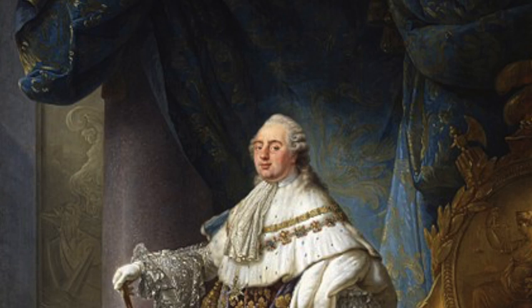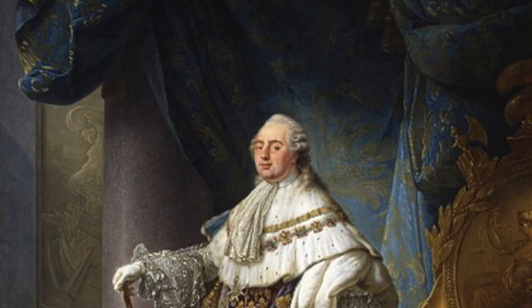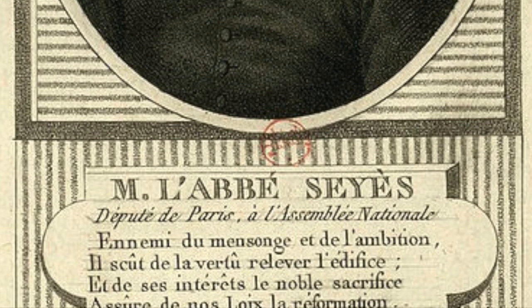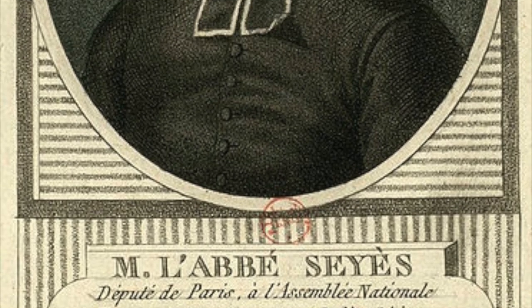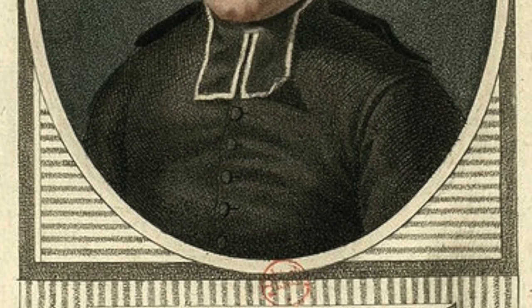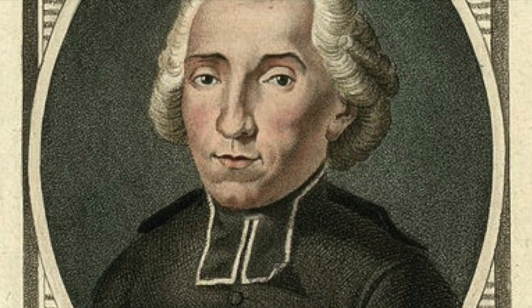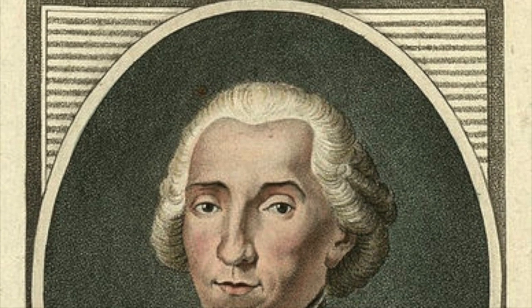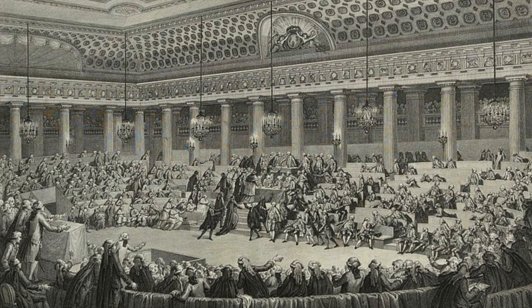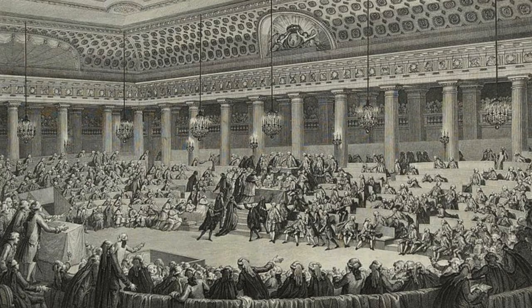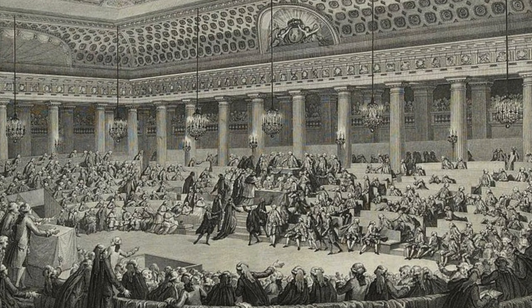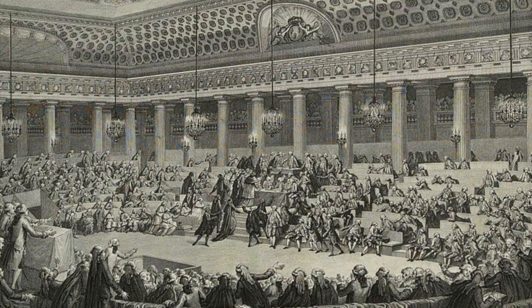On the 10th of June 1789, the theorist and Catholic clergyman Abbé Sieyès decided that the third estate would proceed with verifying their own powers, and they soon voted for a measure declaring themselves the National Assembly. Although the other orders were invited, they made it clear that they would conduct the nation's affairs with or without them.